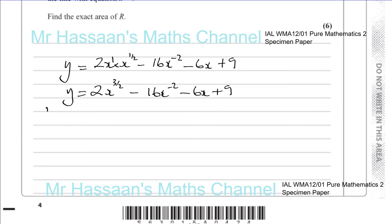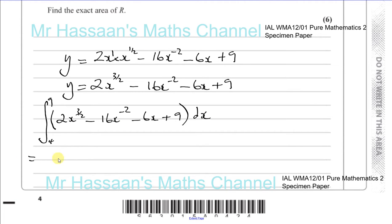We are going to integrate it between the limits of 4 and 9. And we are going to integrate 2x to the power of 3 over 2 minus 16x to the power of minus 2 minus 6x and plus 9 with respect to x. Now when you integrate something like this, once you've started integrating you don't write the integral sign anymore.